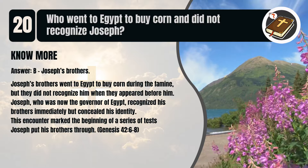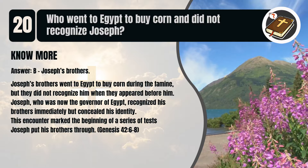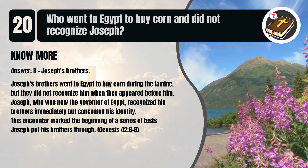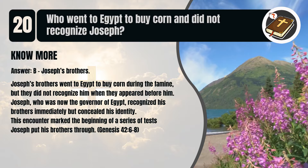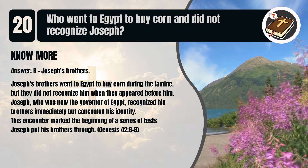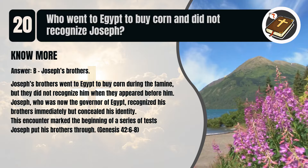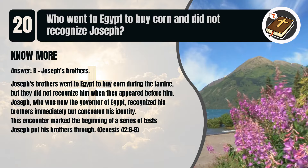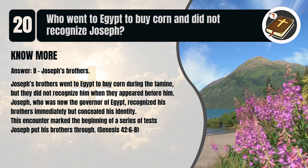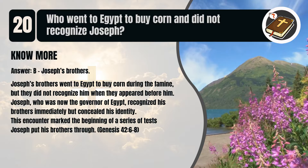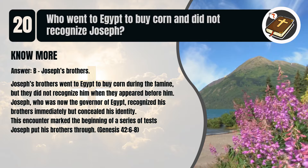That's B. Joseph's brothers. Joseph's brothers went to Egypt to buy corn during the famine, but they did not recognize him when they appeared before him. Joseph, who was now the governor of Egypt, recognized his brothers immediately but concealed his identity. This encounter marked the beginning of a series of tests Joseph put his brothers through. Genesis chapter 42 verses 6 to 8.